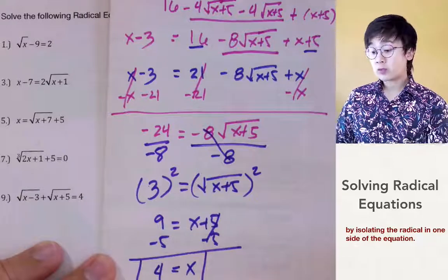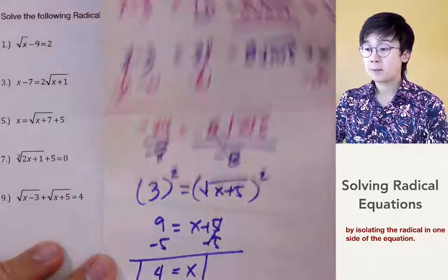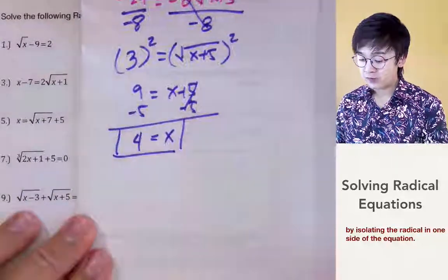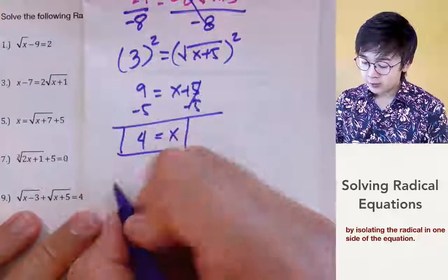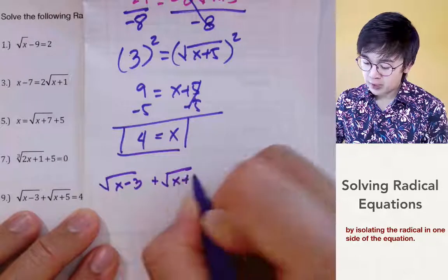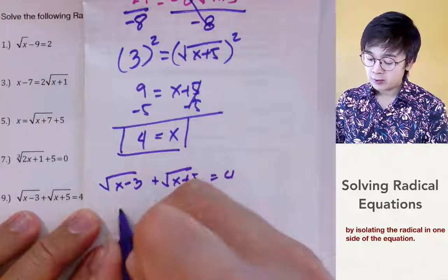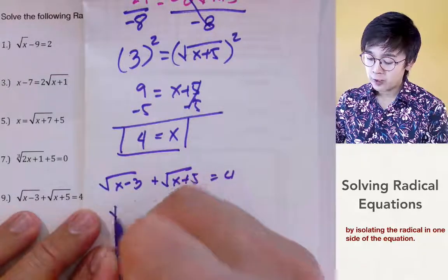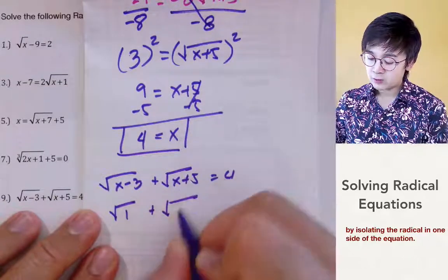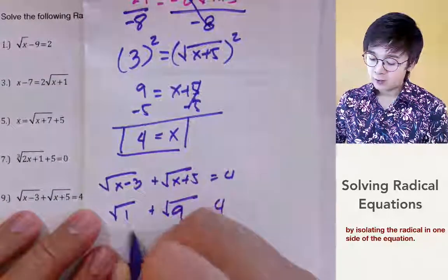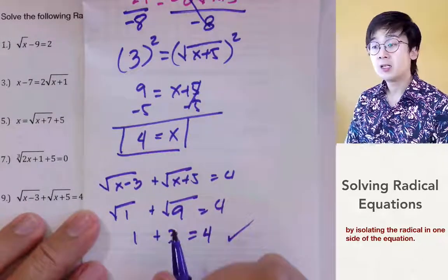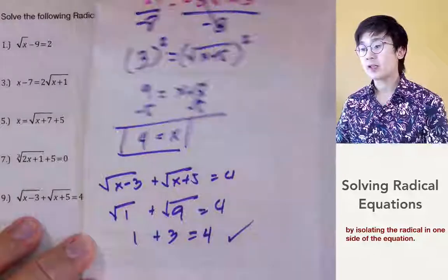After simplifying, x equals 4 for problem number 9. To verify: square root of 4 minus 3 plus square root of 4 plus 5 equals square root of 1 plus square root of 9, which is 1 plus 3 equals 4. This satisfies the equation, confirming x equal to 4 is the correct solution. That's how we solve radical equations in algebra.